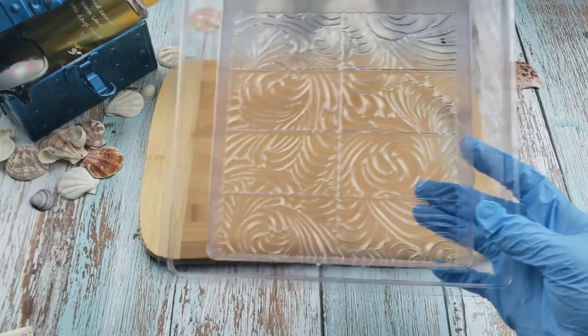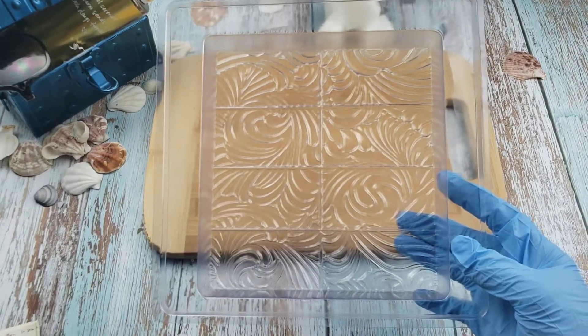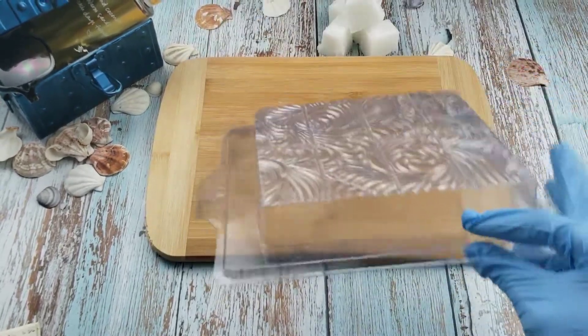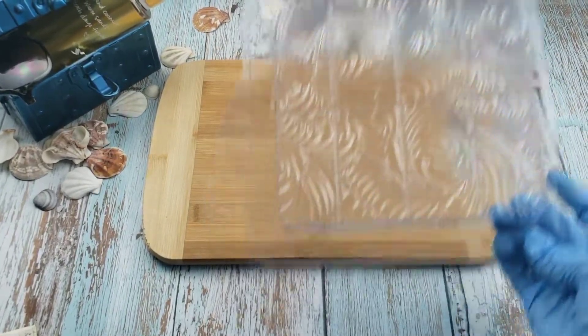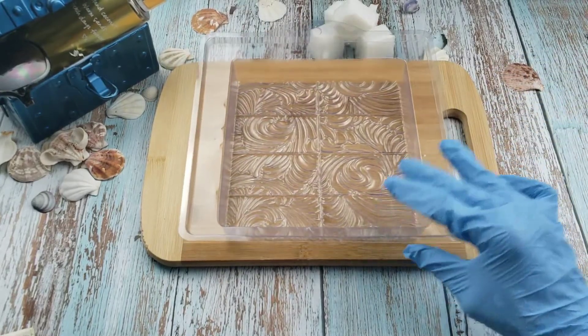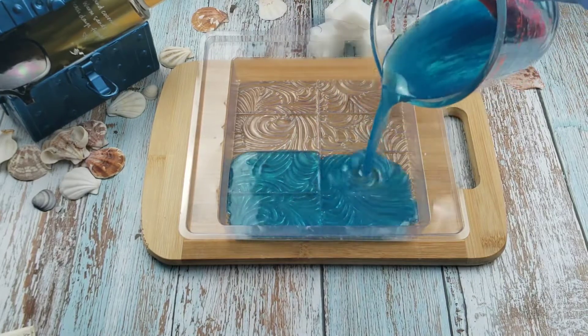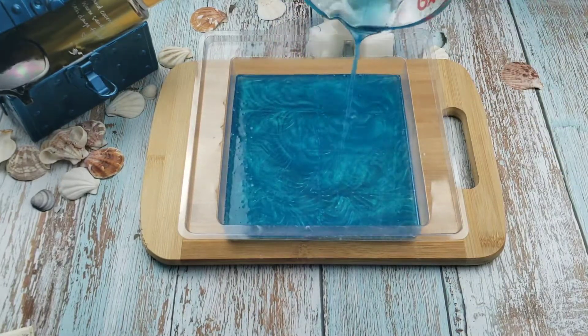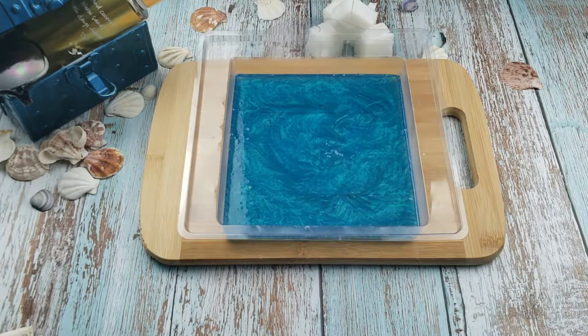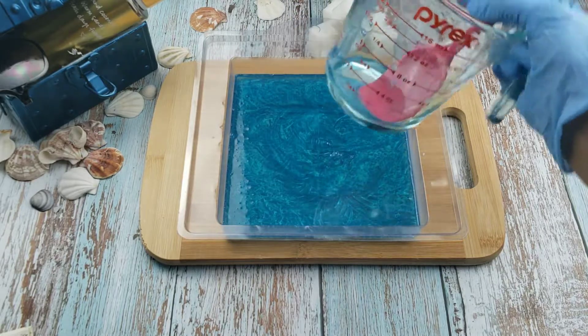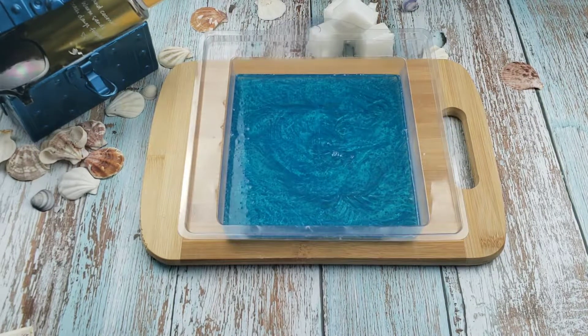I'm using this arabesque tree mold that will give the top of the soap an interesting design without any effort on my part. Now I'll just pour the base in, then I'll spritz the top with some isopropyl alcohol to burst the bubbles and I'll leave this undisturbed to start to set for about 15 minutes.